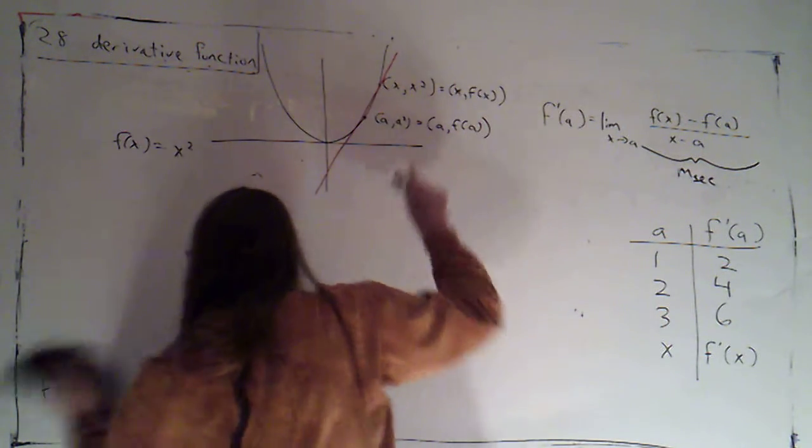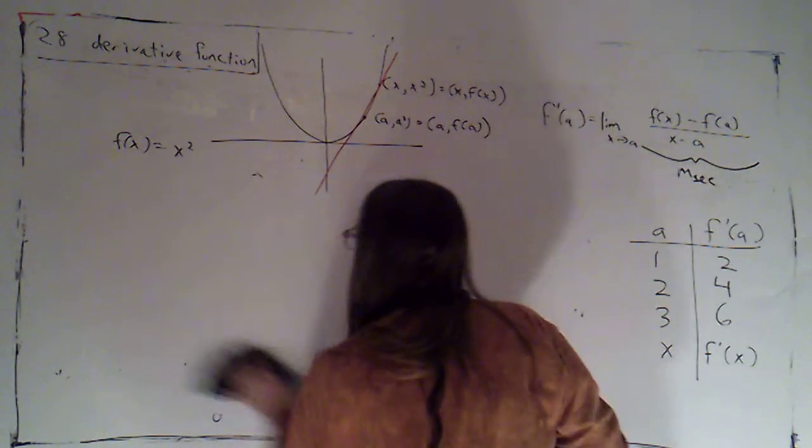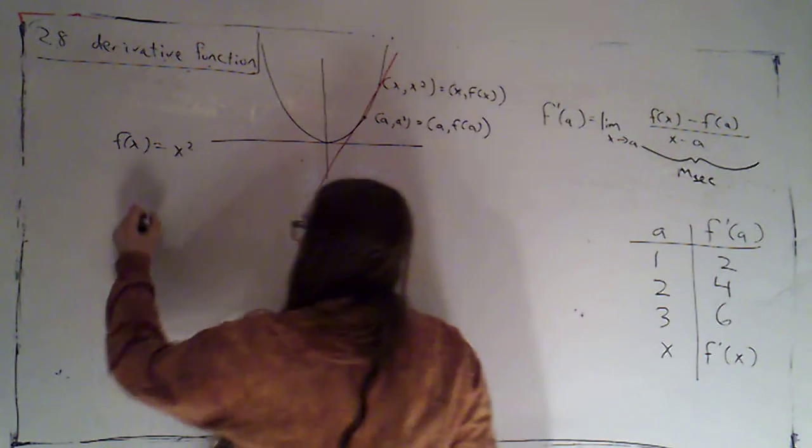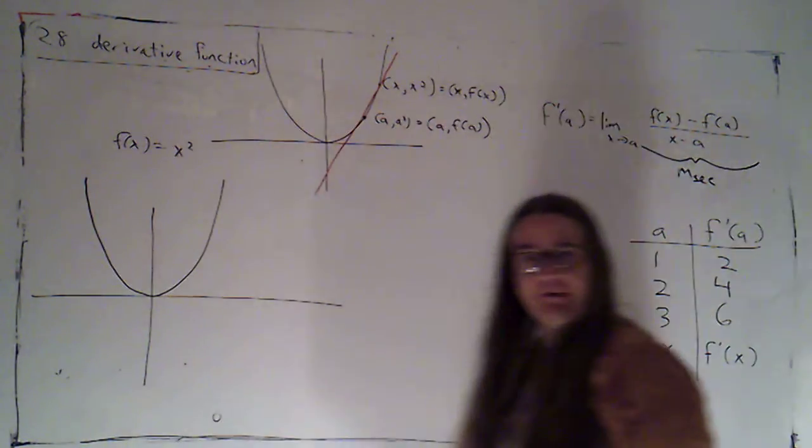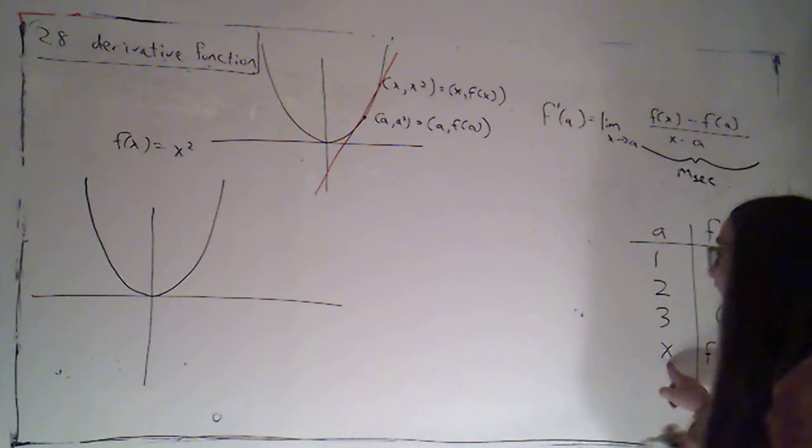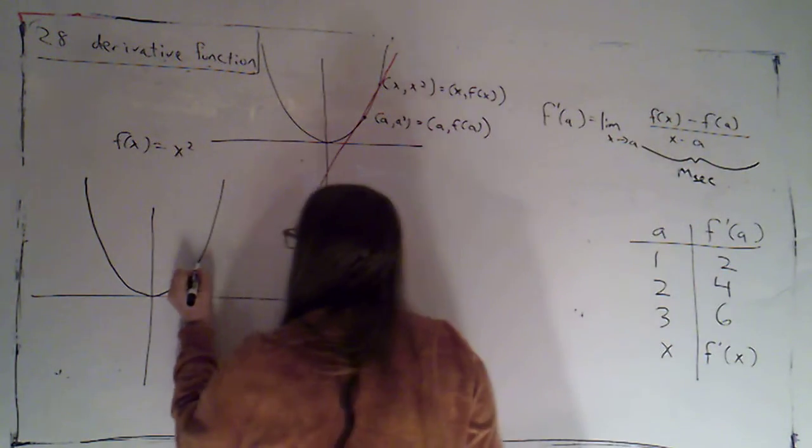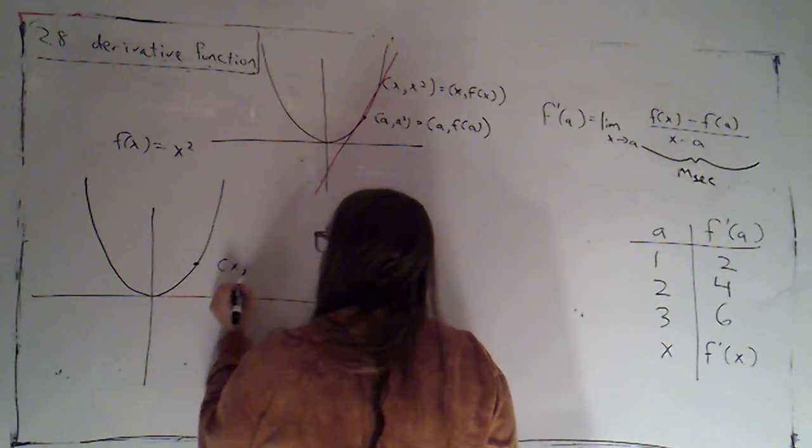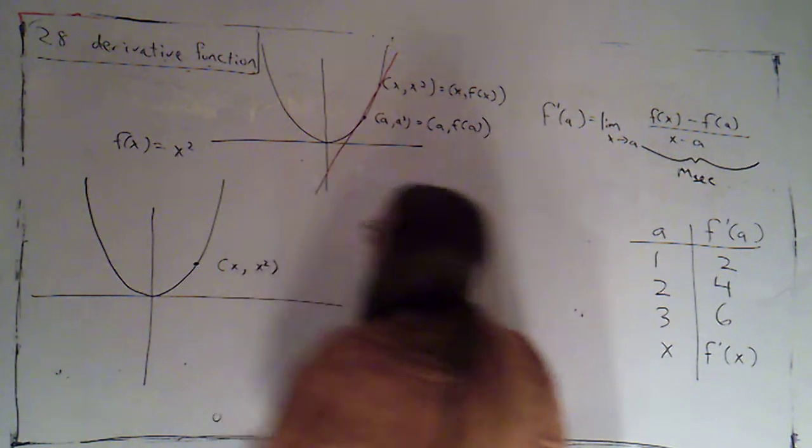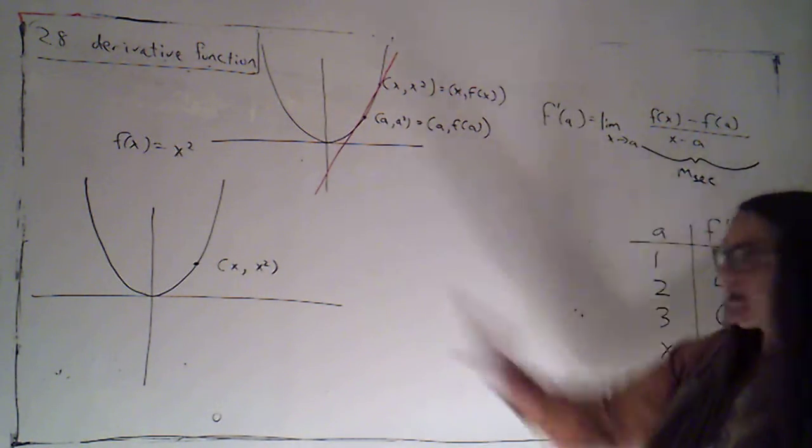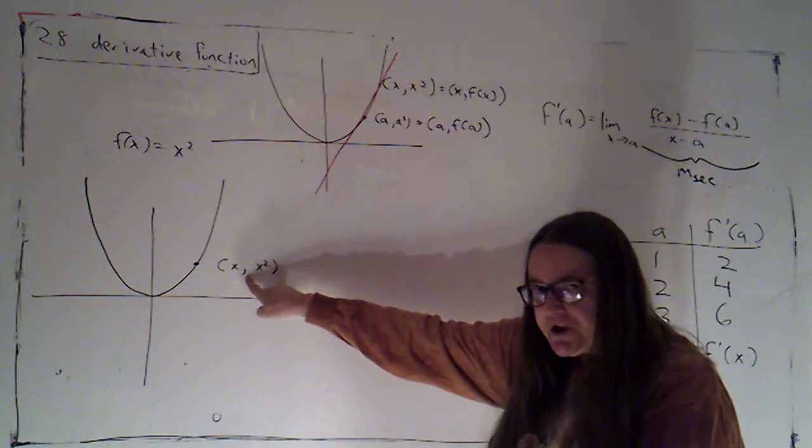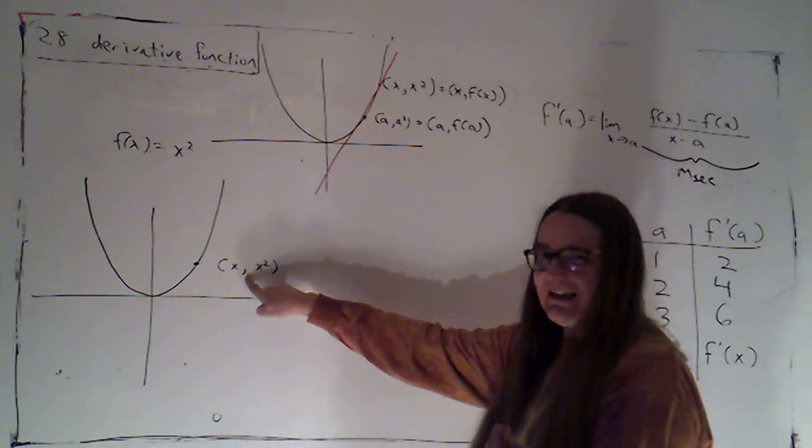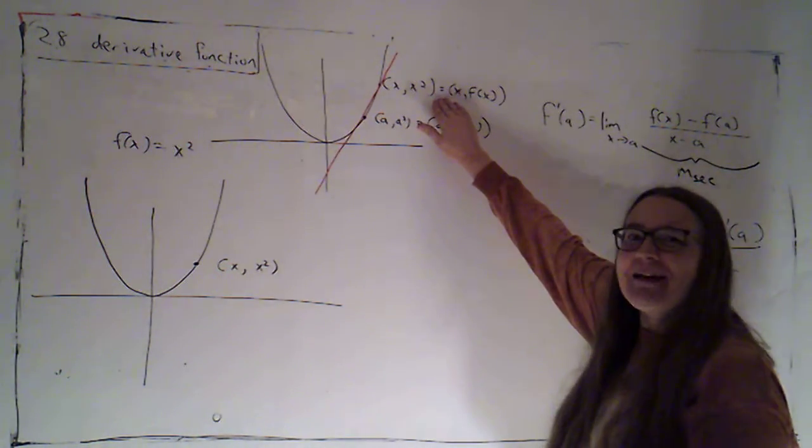So let's see how that would work. Now I've got this picture here labeled for finding the derivative at a point a. The big difference here is that I'm going to just be labeling my points differently. I now want x to be the point of tangency. So I'm going to label this point x and then x squared.